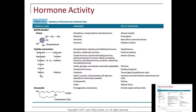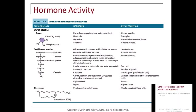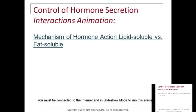Eicosanoids are also important — prostaglandins and leukotrienes are the two arms of eicosanoids. There are beneficial prostaglandins and some destructive ones. They're both involved in affecting the body in various ways. Now let's look at a video showing the action of fat-soluble versus water-soluble hormones and how they act on their target cells.